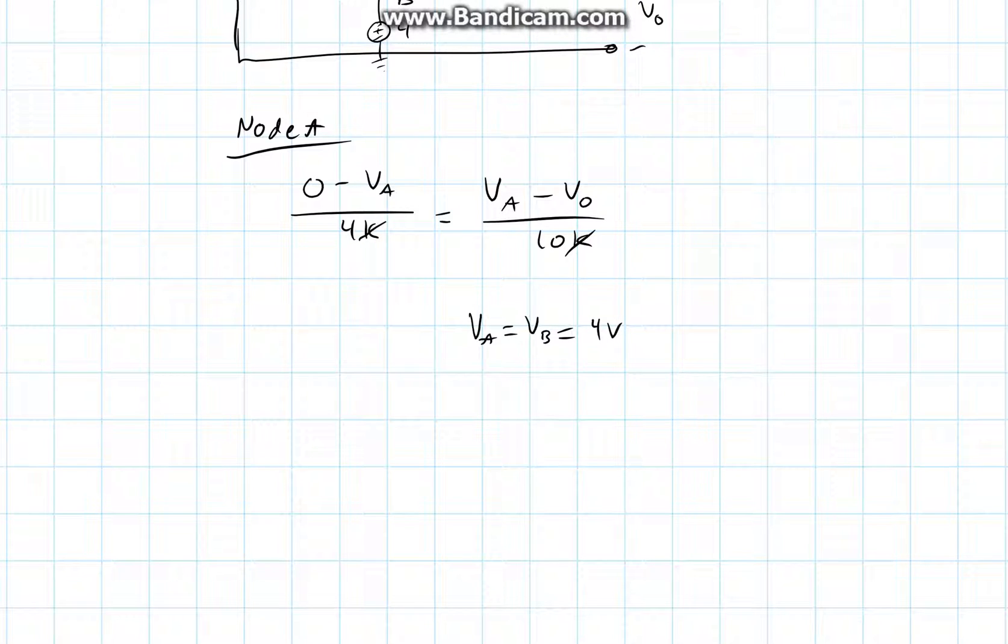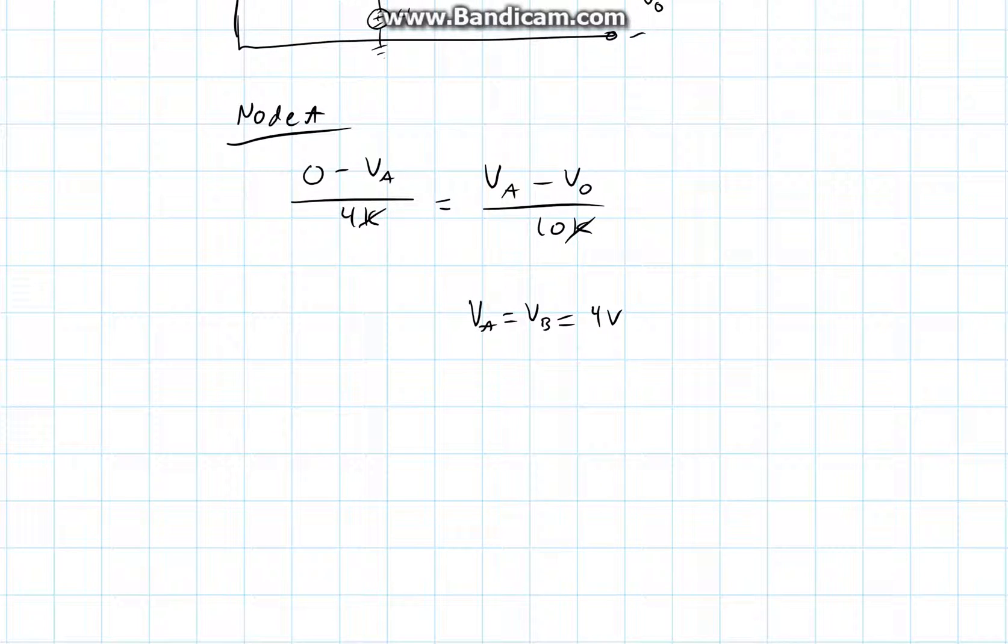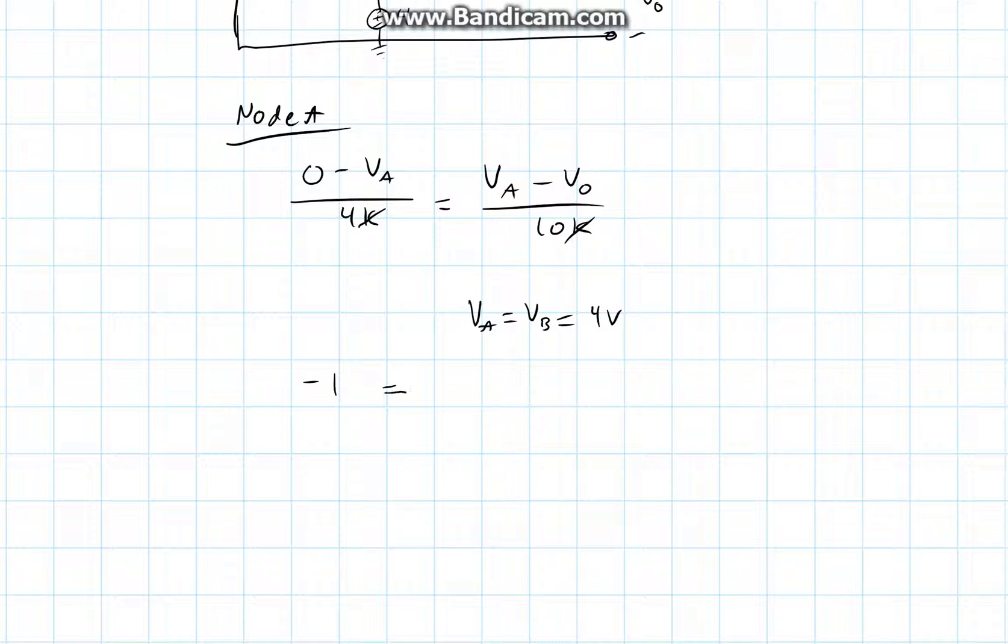So plugging this in to the above equation and simplifying, we will get minus 1 is equal to 4 minus V0 over 10.